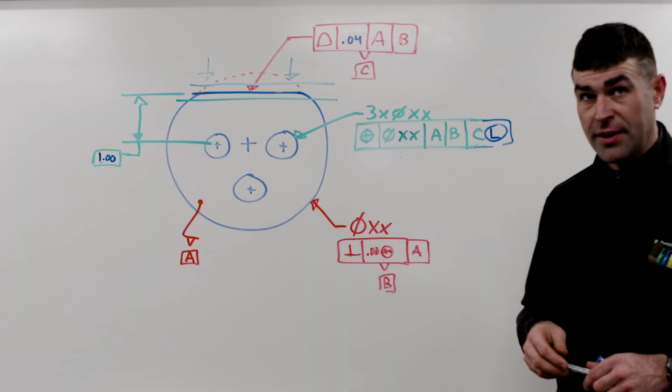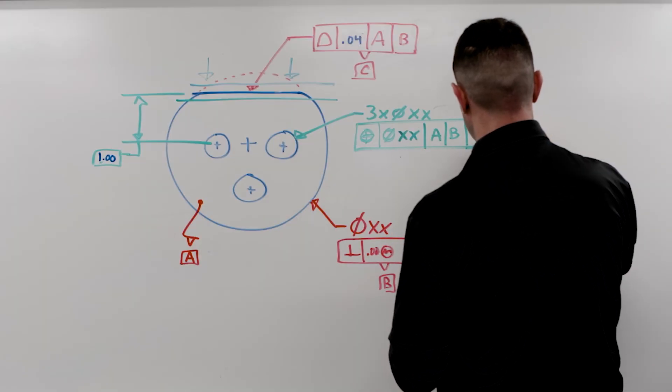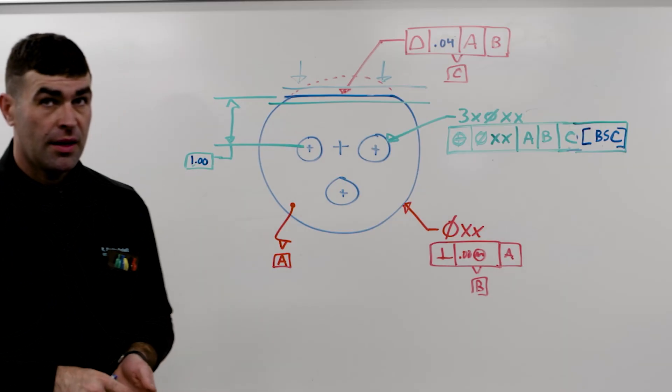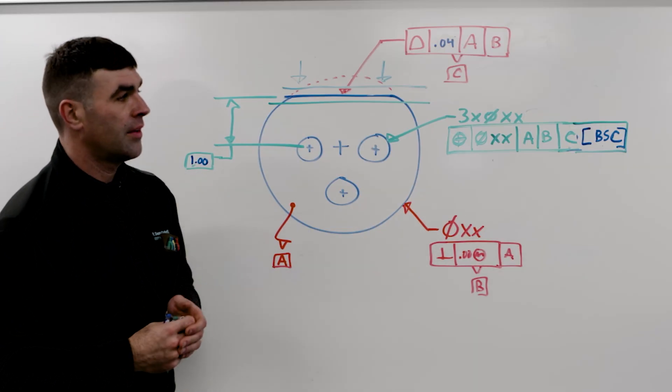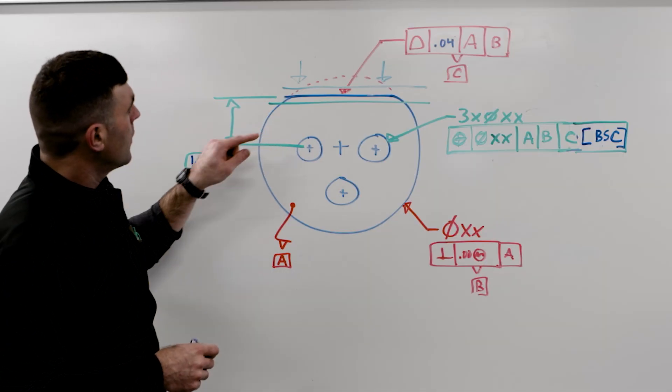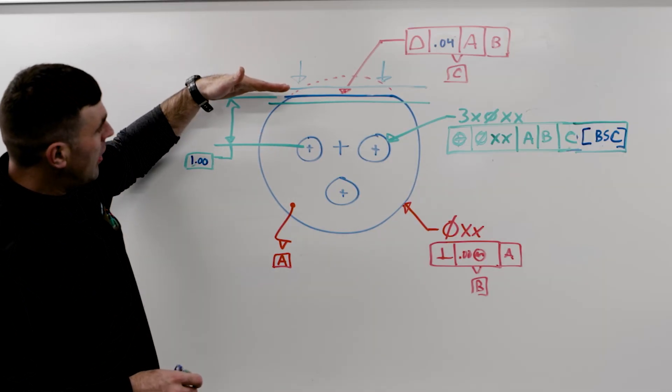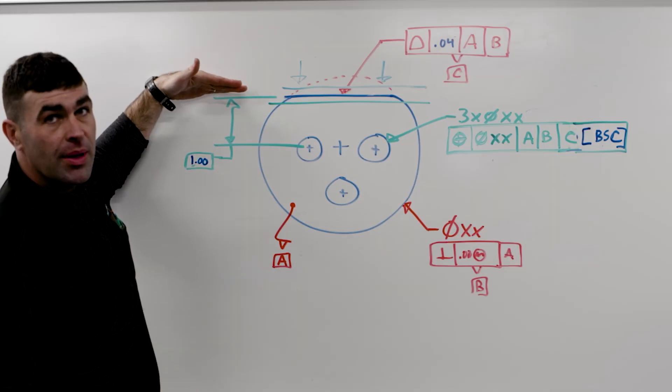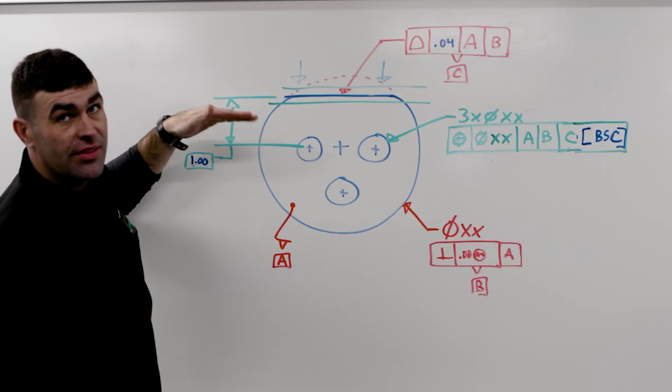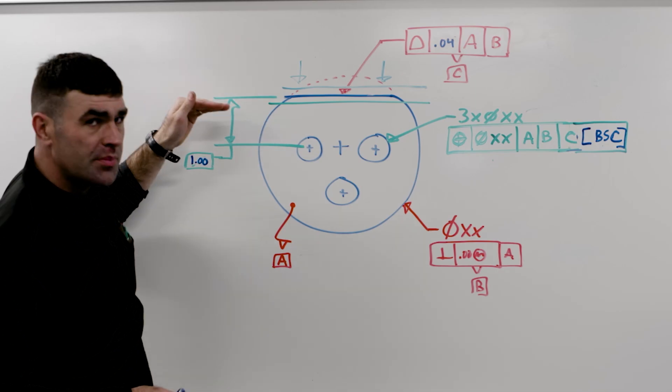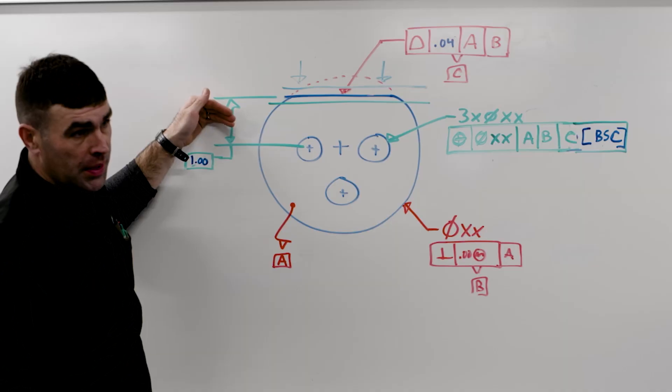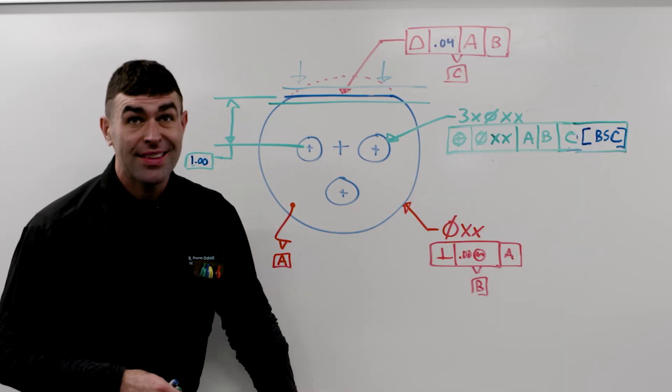The other one you might see is basic. And in Y14.5, it's shown this way with brackets, BSC in capital letters. Here, we would set our true geometric counterpart at the basic dimension. So you've got three options here. You can set the TGC at the LMB, RMB, or MMB. You get three different kinds of setups for this.